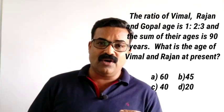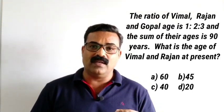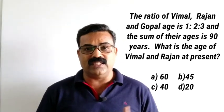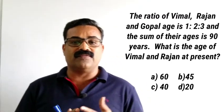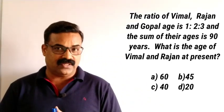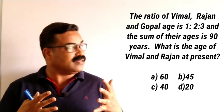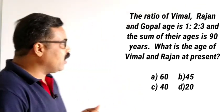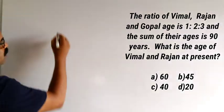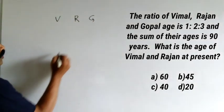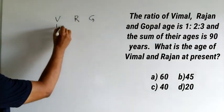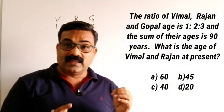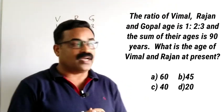The ratio of Vimal, Rajan, and Gopal is 1:2:3 and the sum of their ages is 90 years. What is the age of Vimal and Rajan at present? This is an age problem involving three people. Their ages are in the ratio 1:2:3, and the total age is 90.